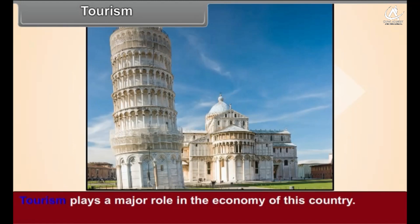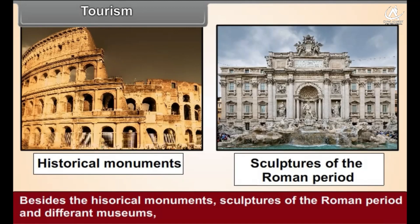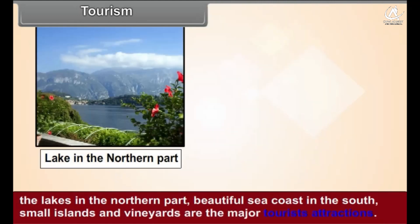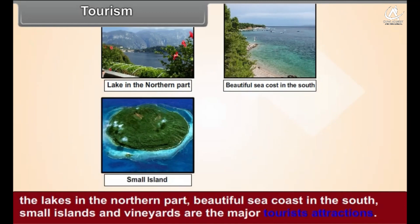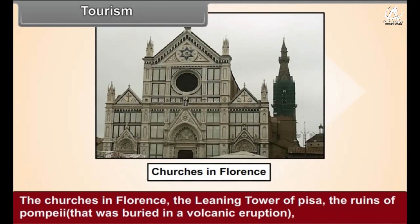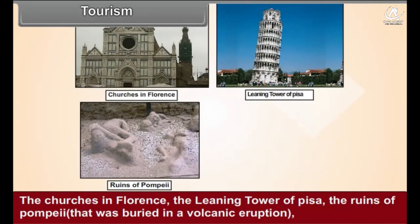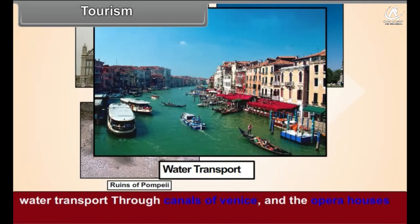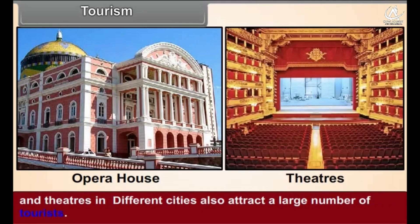Tourism: Tourism plays a major role in the economy of Italy. Besides historical monuments, sculptures of the Roman period, and different museums, the lakes in the northern part, the beautiful sea coast in the south, small islands, and vineyards are major tourist attractions. The churches in Florence, the Leaning Tower of Pisa, the ruins of Pompeii buried in a volcanic eruption, water transport through the canals of Venice, and the opera houses and theatres in different cities also attract large numbers of tourists.